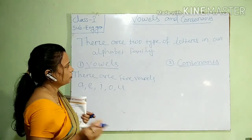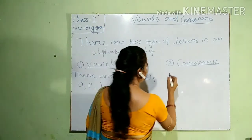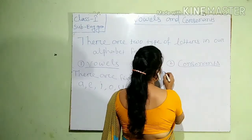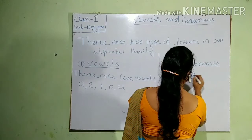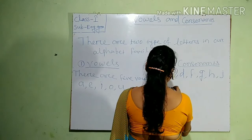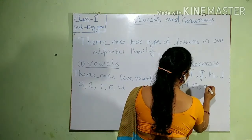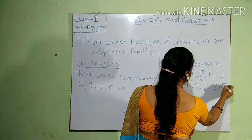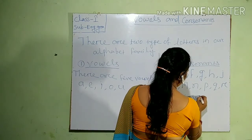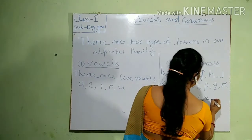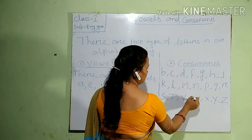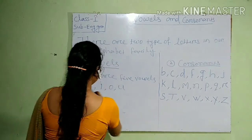And the rest of the letters are called consonants. And what are they? B, C, D, F, G, H, J, K, L, M, N, P, Q, R, S, T, V, W, X, Y and Z. So these are the consonant letters and these are the vowels.